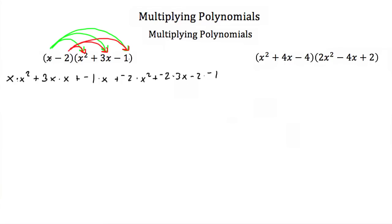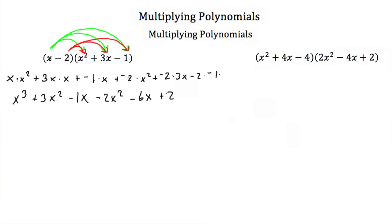x times x squared is just x cubed. 3x times x is 3x squared. Negative 1 times x is minus 1x. Negative 2 times x squared is negative 2x squared. Negative 2 times 3x would be minus 6x. And negative 2 times negative 1 is just positive 2.